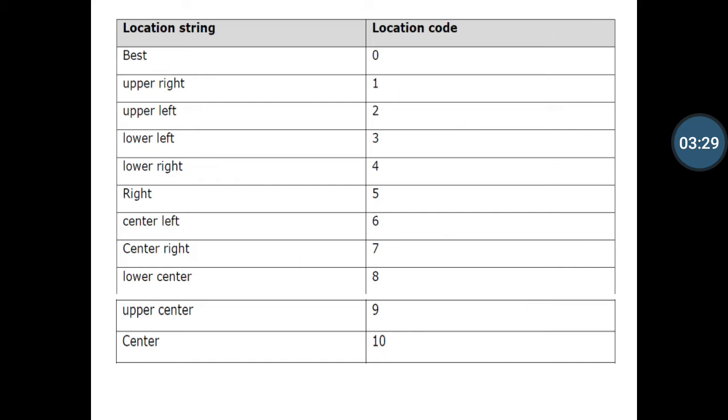And 'right' for 5, and 'center left' equals 6, and 'center right' equals 7, 'lower center' equals 8, 'upper center' equals 9, and 'center' equals 10. You can use the following codes in your programming for legend locations.